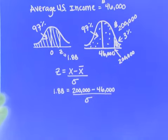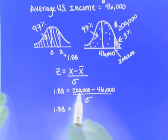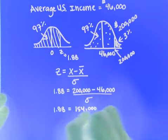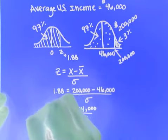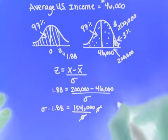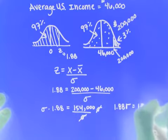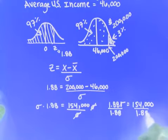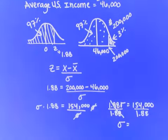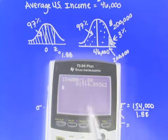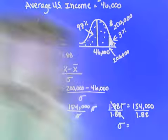To solve for the standard deviation, first I do the subtraction on top: 200,000 - 46,000 = 154,000. Then I multiply both sides by σ, which cancels out the denominator. Now I have 1.88σ = 154,000. I divide both sides by 1.88. That gives me σ = 154,000/1.88, which equals about $81,914. I'm going to round that to $82,000.